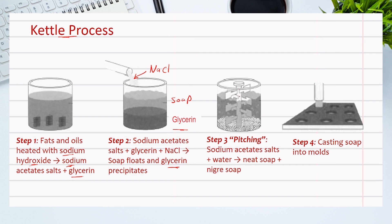The separated soap undergoes a process called pitching, where the soap is heated with water, causing it to separate into two layers: neat soap at the top and nigre soap, which contains impurities, at the bottom. The neat soap is taken off at the top and purified several times. The last step is casting the soap into molds and allowing it to harden into large slabs that are cut into smaller bars.